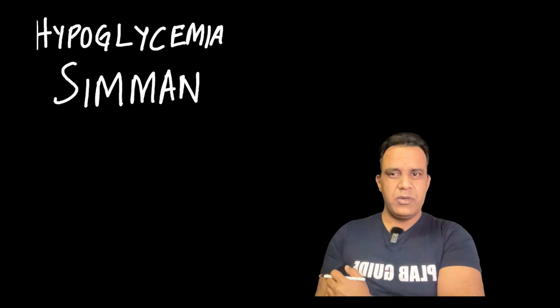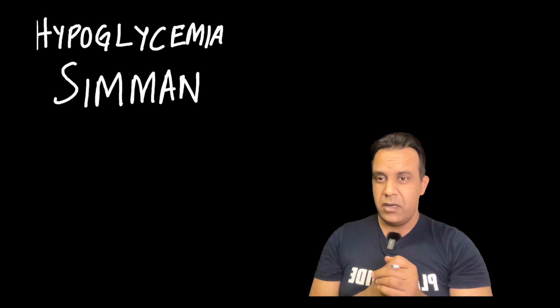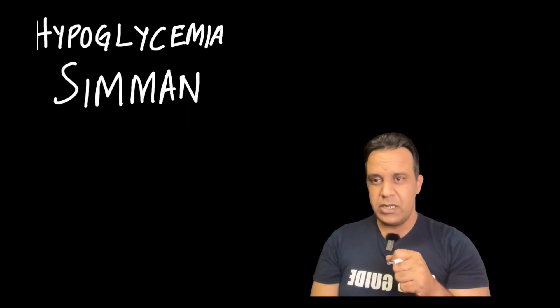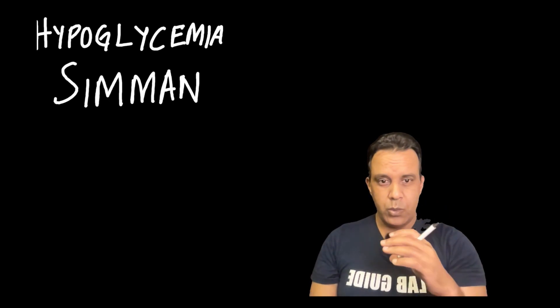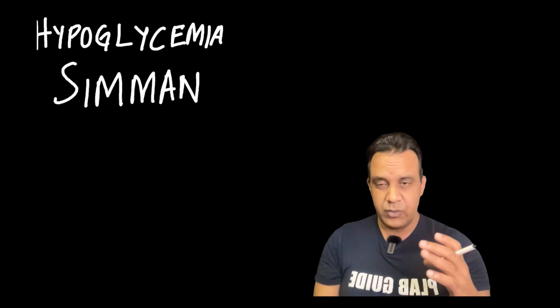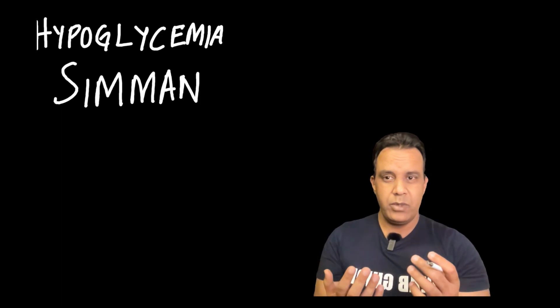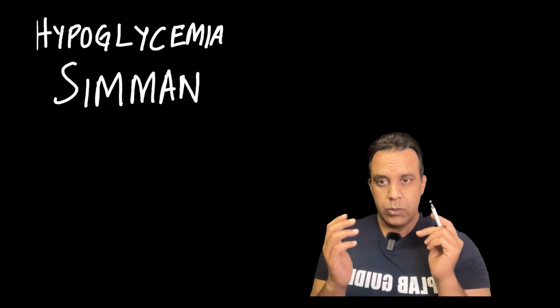Hypoglycemia is one of the very commonly tested scenarios in simulation exams. It has been asked several times and is very easy to approach — very easy to score maximum marks. Many candidates score 12 out of 12. Usually the patient is unconscious, or conscious but very drowsy, depending on your situation. It is a very easy station where you can score full marks.